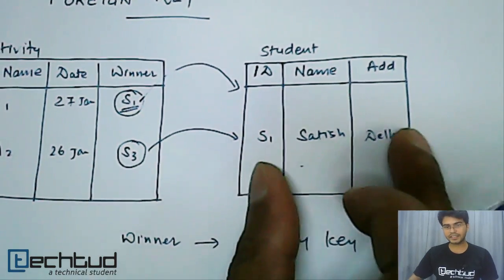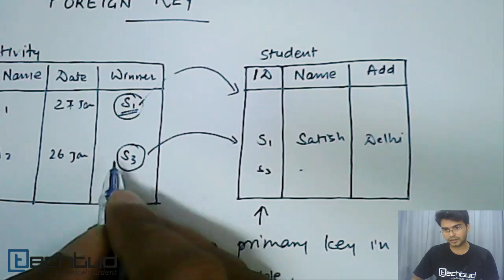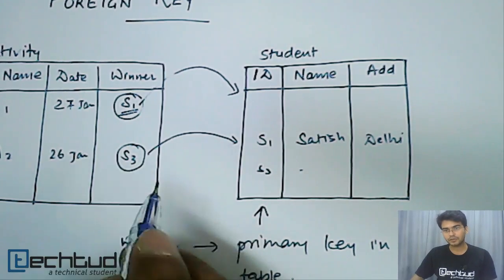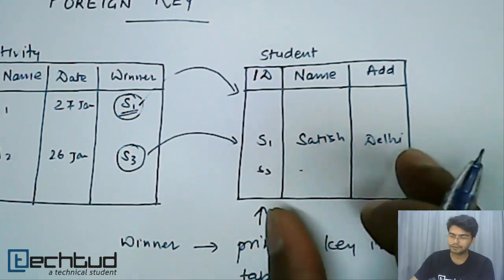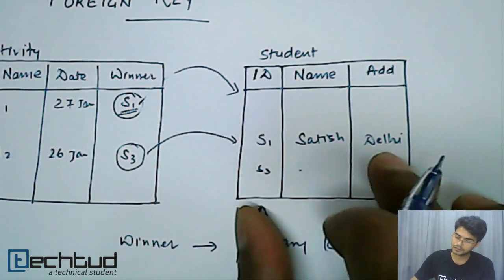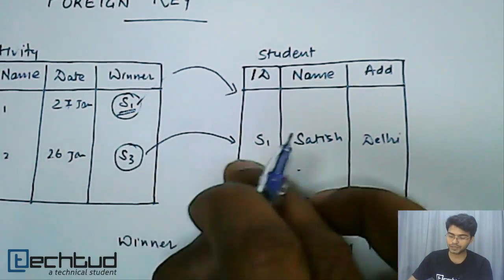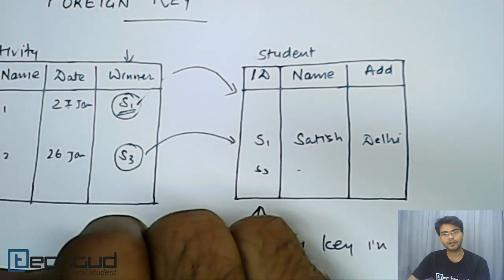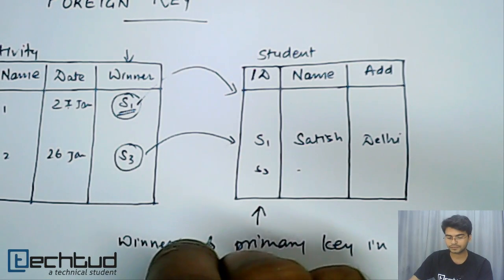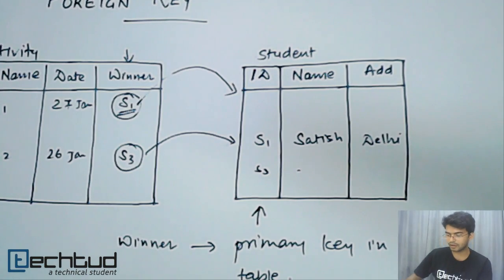So we are not storing entire detail of the student in this activity table. We are just storing a key through which we can identify or through which we can refer another table and find out the details of that student. So every time to refer we are using this key. That's why it is also called referring key. This is the concept of foreign key.